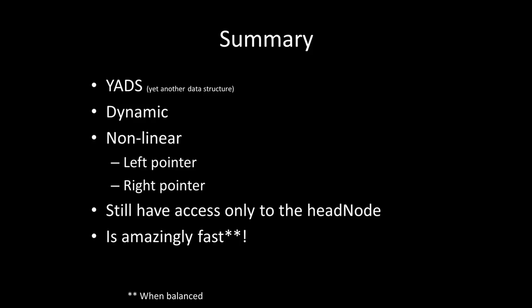So in summary, binary search trees are yet another data structure. Just like linked lists, they're dynamic. However, they're non-linear, meaning that they have a left and they have a right pointer. We still only have access to a head node. However, binary search trees are amazingly fast provided that they're balanced. So hopefully this helps you understand a little bit more about binary search trees and how fast they really are.